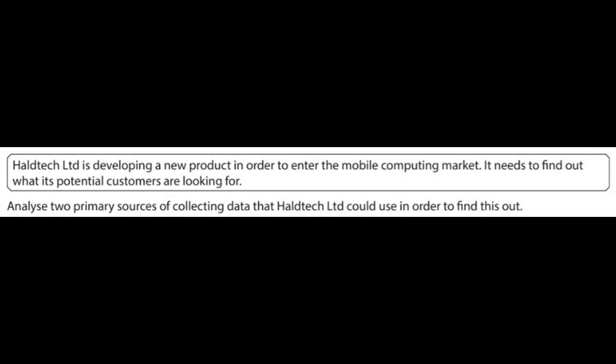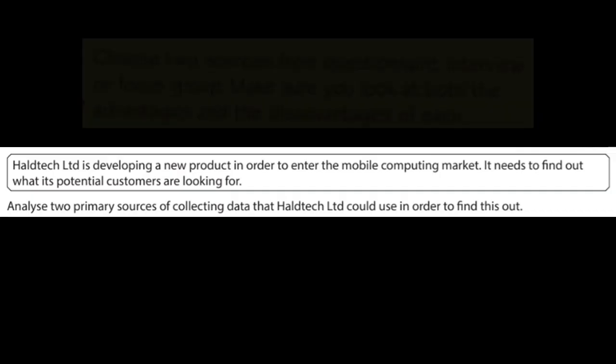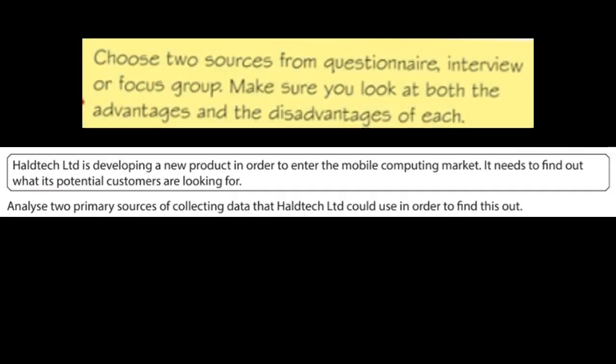In this section of the video we're going to go over an example question that you might get asked in your exam. The question tells us that the company is working on a new product and they want to get it into the mobile computing market, and they want to find out what their potential customers are looking for. The question is asking us to analyse two primary sources of collecting data that the company could use to find out what their customers want.